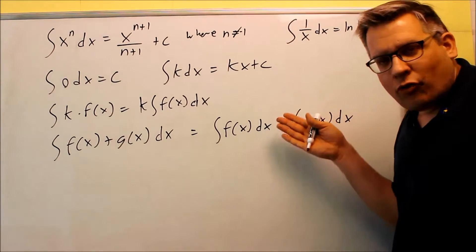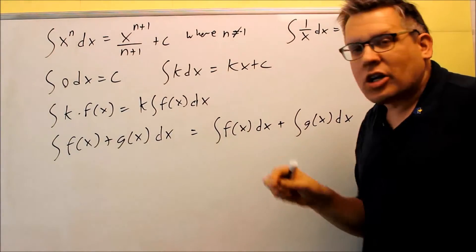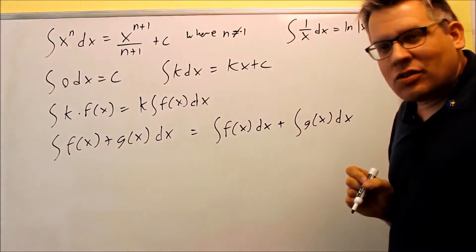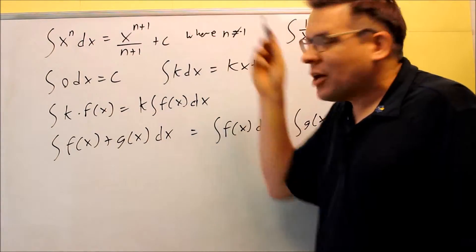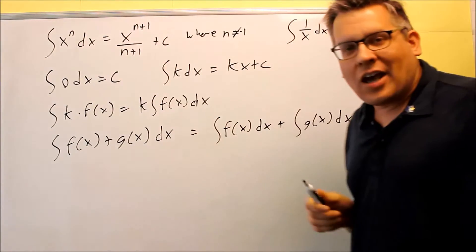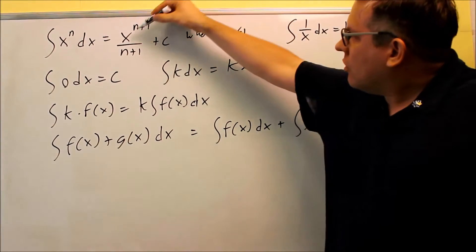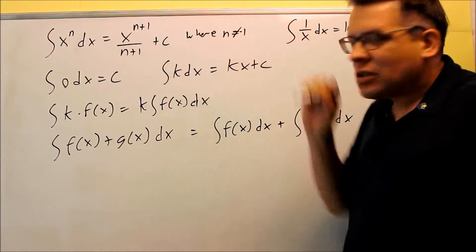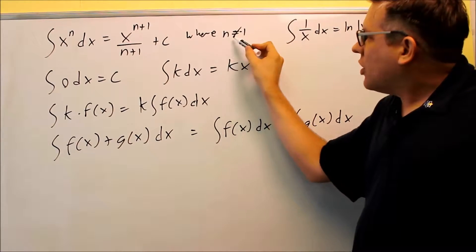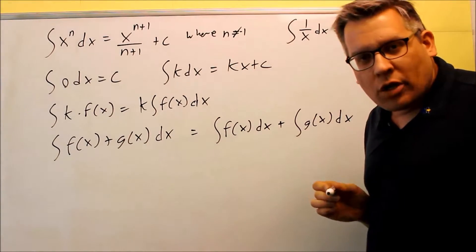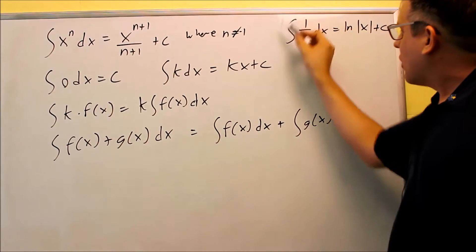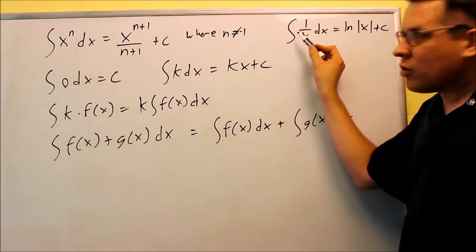Here's some anti-derivative formulas. When we had x to the power to get to x to the third, we talked about adding one, dividing by the new power. So we're making it generally, if you have x to the n, then what you do is you raise the power by one, divide by the new power, and don't forget to add the c. Now this only works if your n is not equal to negative one, because if your n is negative one, that means you're dividing by zero.